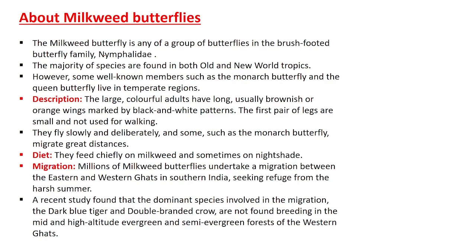In their description, they are large, colorful adults with long, usually brownish or orangish wings marked by a black and white pattern. The first pair of legs is small and not used for walking. They fly slowly and deliberately, and some, such as the Monarch Butterfly, migrate great distances. In their diet, they feed mainly on milkweed and sometimes on nightshade.